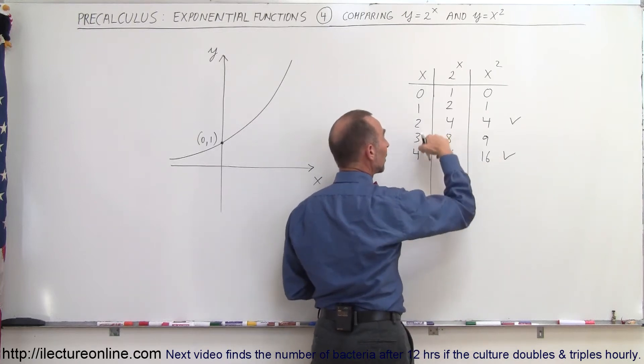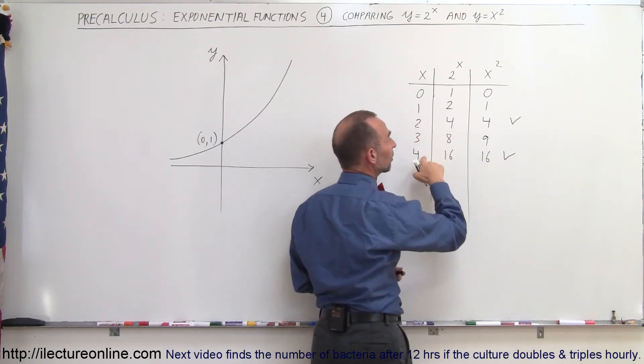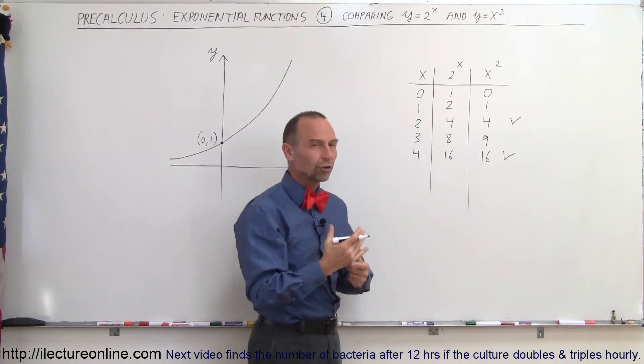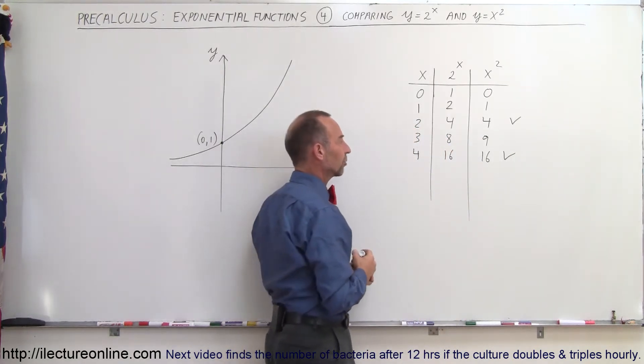But in between, anywhere in between, between x equal to 2 and x equal to 4, the quadratic function has a larger value, a larger y value, than the exponential function.